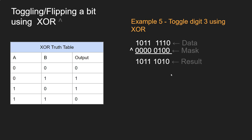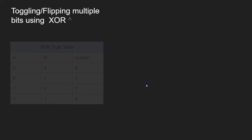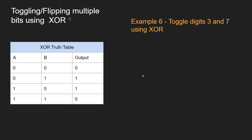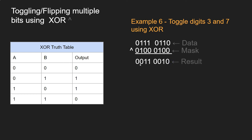That's how you toggle an individual digit using an exclusive OR. The symbol for XOR is the hat or caret symbol (^). It also works with multiple digits — if we want to toggle digits 3 and 7, we just put both of those as 1 in our mask, and it will toggle exactly the numbers we wanted.